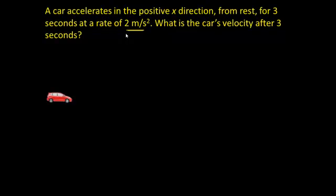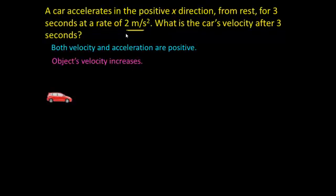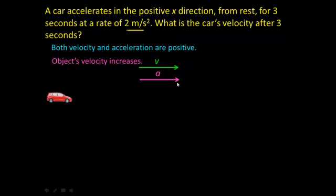Let's pull out some useful information. Both the velocity and acceleration are positive, which tells us the object's velocity is going to increase. If we draw the object's velocity vector — indicating how fast and in what direction the car travels — it points in the positive x direction. The acceleration vector also points in the positive x direction.